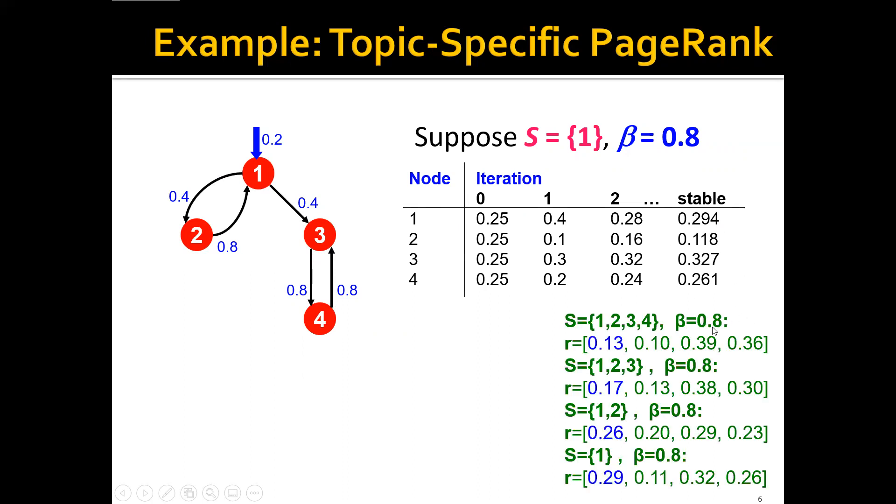And in fact, let's say that we fix the beta to be 0.8, and then we change the teleport set from {1,2,3,4} to {1,2,3} to {1,2} and all the way to {1}. We can see that the final score for node 1 actually keeps getting larger and larger. And this is also very intuitive because the smaller this teleport set is, the more score will be allocated to the node 1 by teleportation.